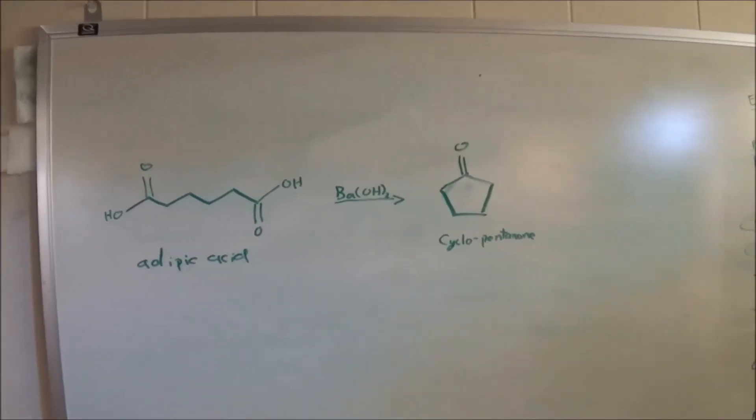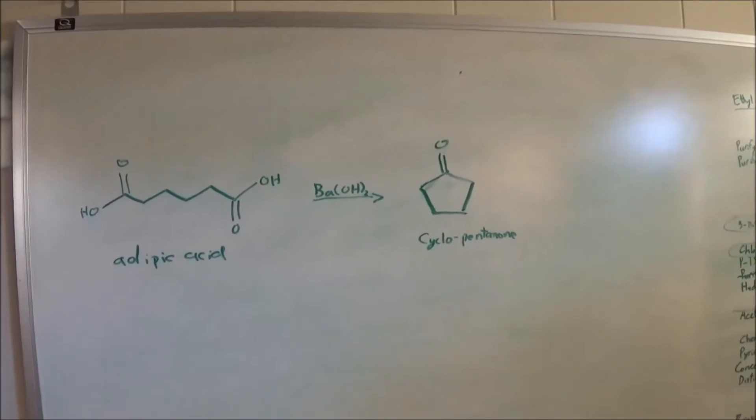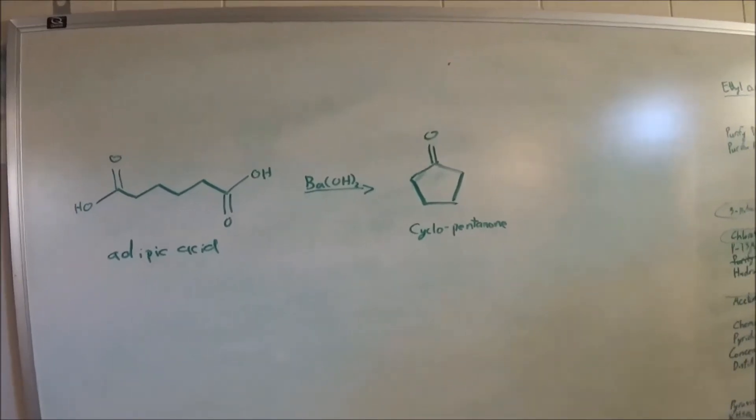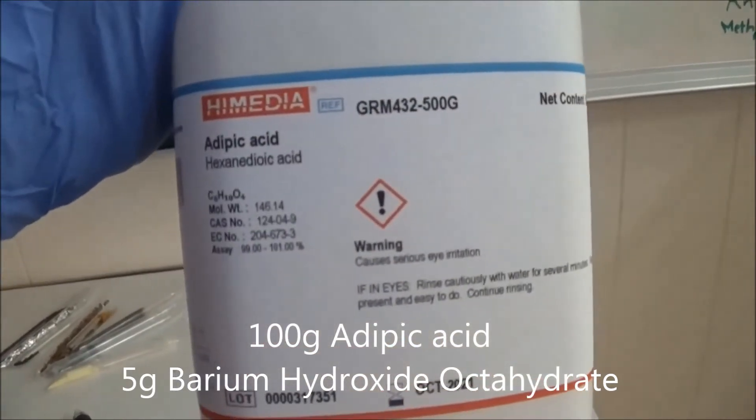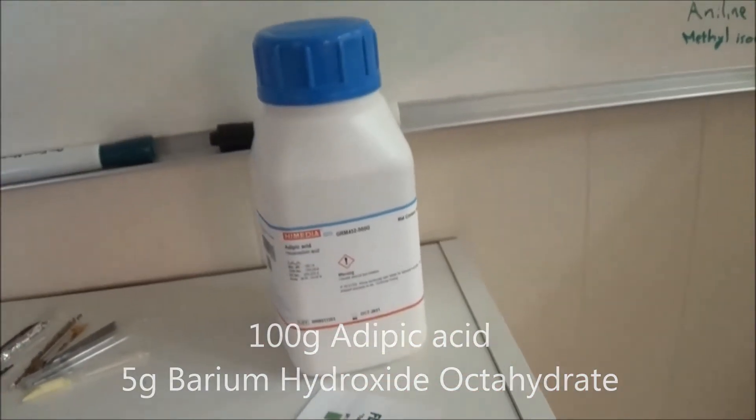The reaction uses a small amount of barium hydroxide as a catalyst. My starting materials are 100 grams of adipic acid and 5 grams of barium hydroxide octahydrate.